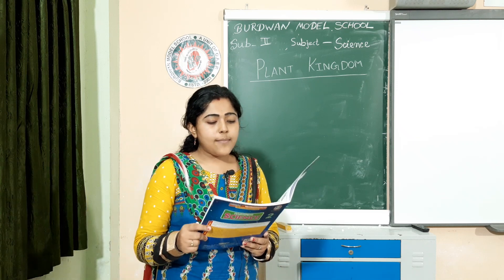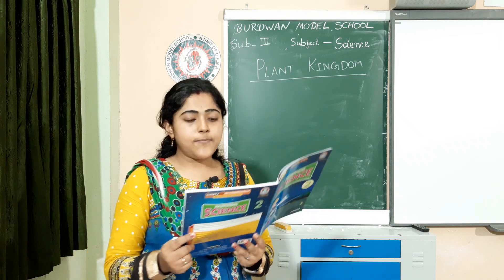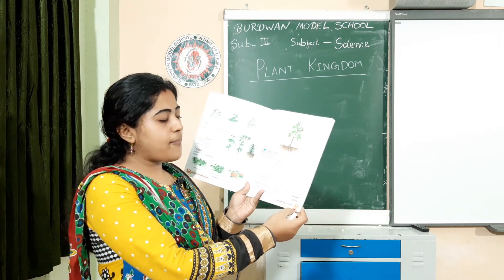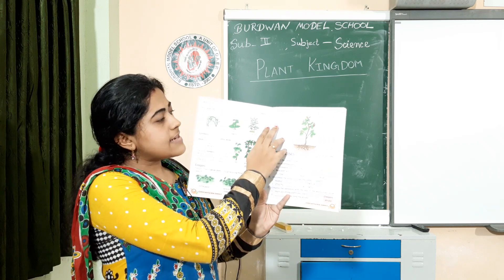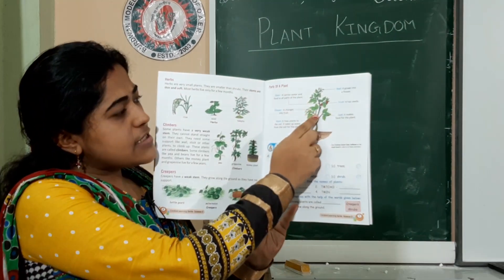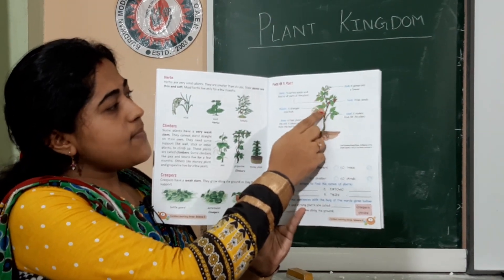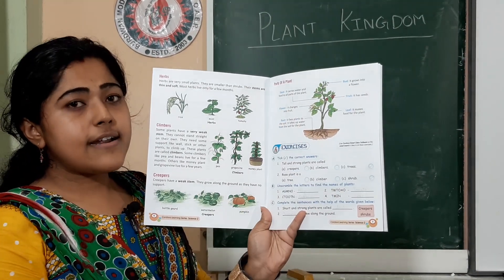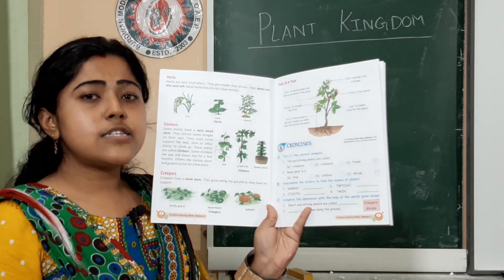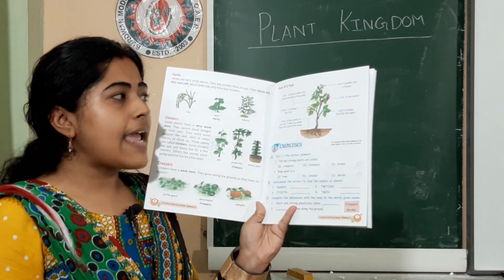Now you have to know the parts of a plant. You can follow your book on page 7. The stem — as shown in this picture — carries water and food to all parts of the plant.